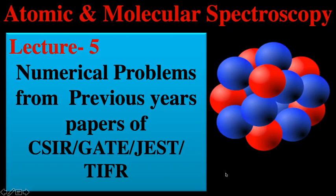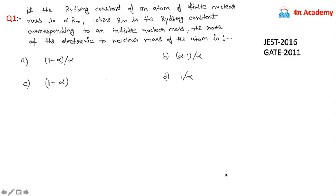After that we discussed the limitations of Bohr theory, then the Sommerfeld-Bohr model for hydrogen-like atoms, including the existence of elliptical orbitals. Today we will discuss all the important questions from these topics, which have appeared in previous year examinations in CSIR, GATE, JEST, and TIFR. So let's start our lecture.